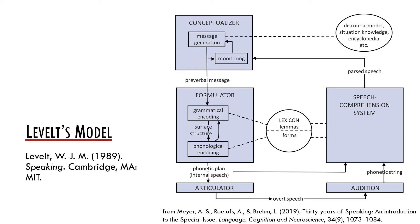The articulator then generates the overt speech. Levelt also stresses the role of the comprehension system, which is fed by both the phonetic plan and the overt speech, and which informs back the conceptualizer through the parsed speech. Importantly, this model is serial and modular, which means that the components are separated and there is no interaction between them. The information thus flows unidirectionally.